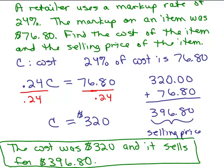And does that seem reasonable to you? If you buy something for $320, you mark it up 25 percent, that's about a quarter. $320, what's a fourth of that? That's 80 bucks. If you added 80 bucks, you'd have $400. Well, this is close to 400 because it's only 24 percent. So that's going back and making sure your answer seems reasonable.